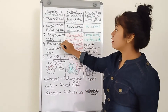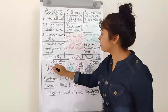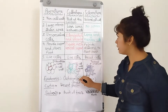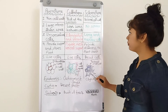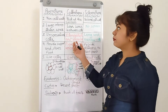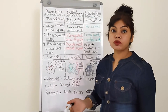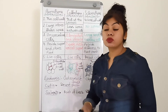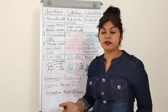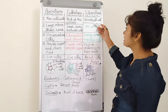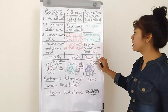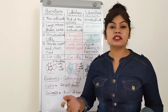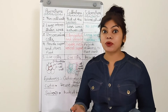Third point — cell shape: parenchyma has unspecialized cells; colenchyma cells are elongated and irregular; sclerenchyma cells are long and narrow. Fourth point — function: parenchyma provides support and stores food; colenchyma provides mechanical support and flexibility so leaves and stalks can bend without breaking; sclerenchyma provides stiffness or hardness to plant parts — examples include coconut husk and nuts.